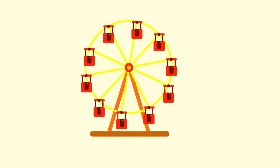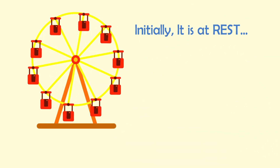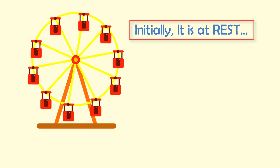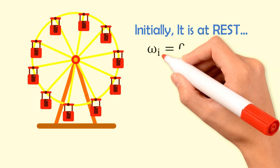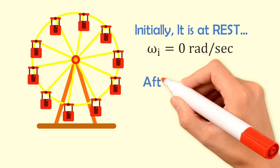Now let's consider a ferris wheel. Let's say initially the ferris wheel is at rest. Hence, its initial angular velocity, omega i, or its initial angular speed, is zero.